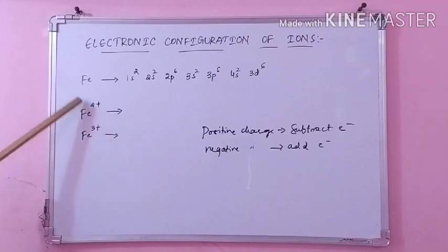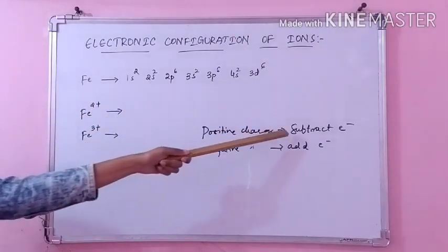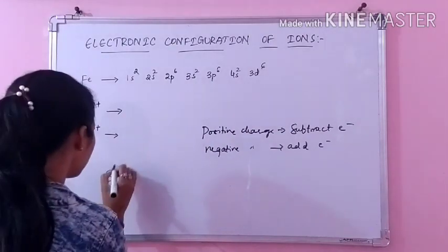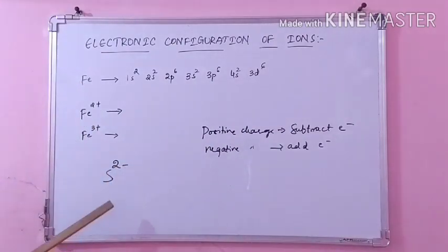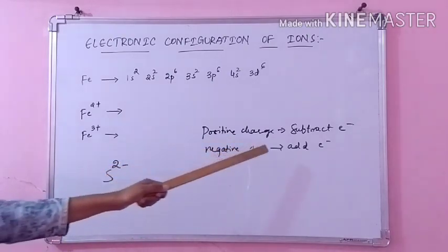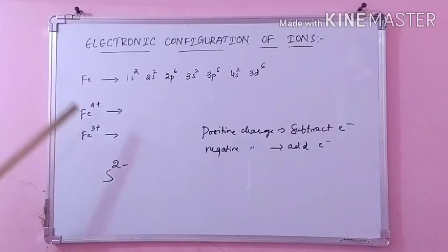If any positive charge comes, however many number of positive charges there are, that many electrons you have to subtract. If negative charge — for example, S2 minus — if negative charge is there, then you have to add so many electrons to that while writing the electronic configuration.